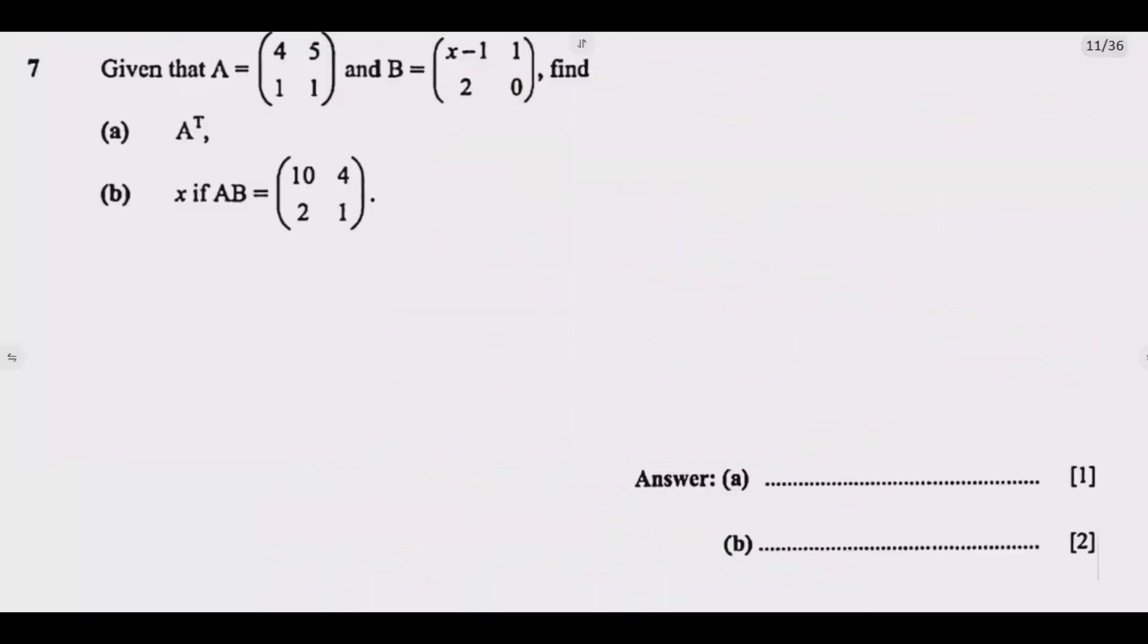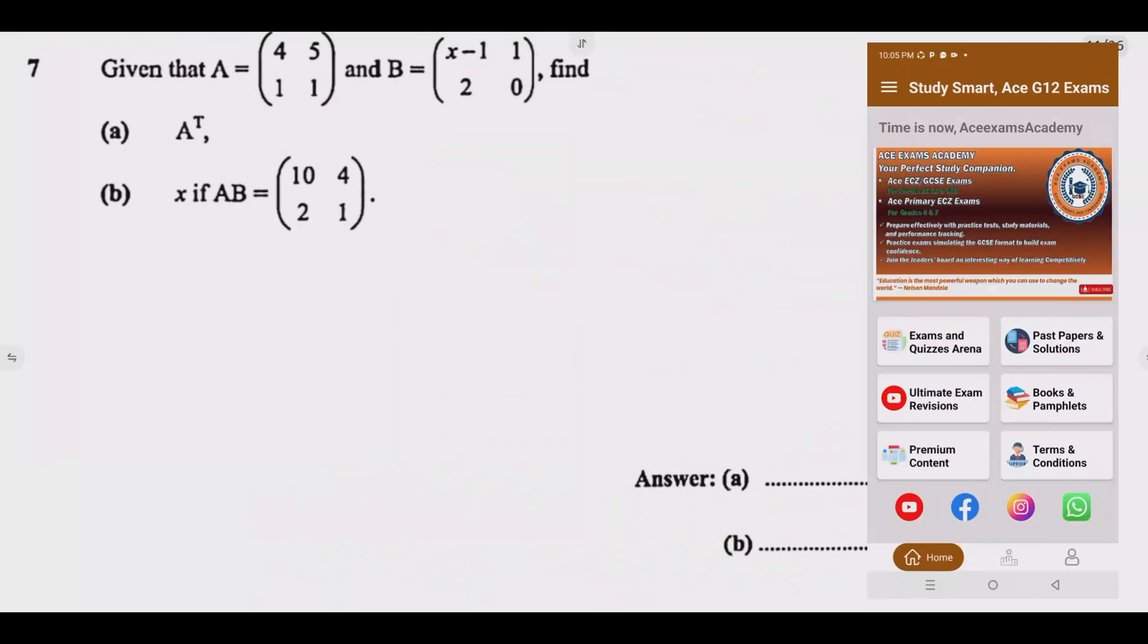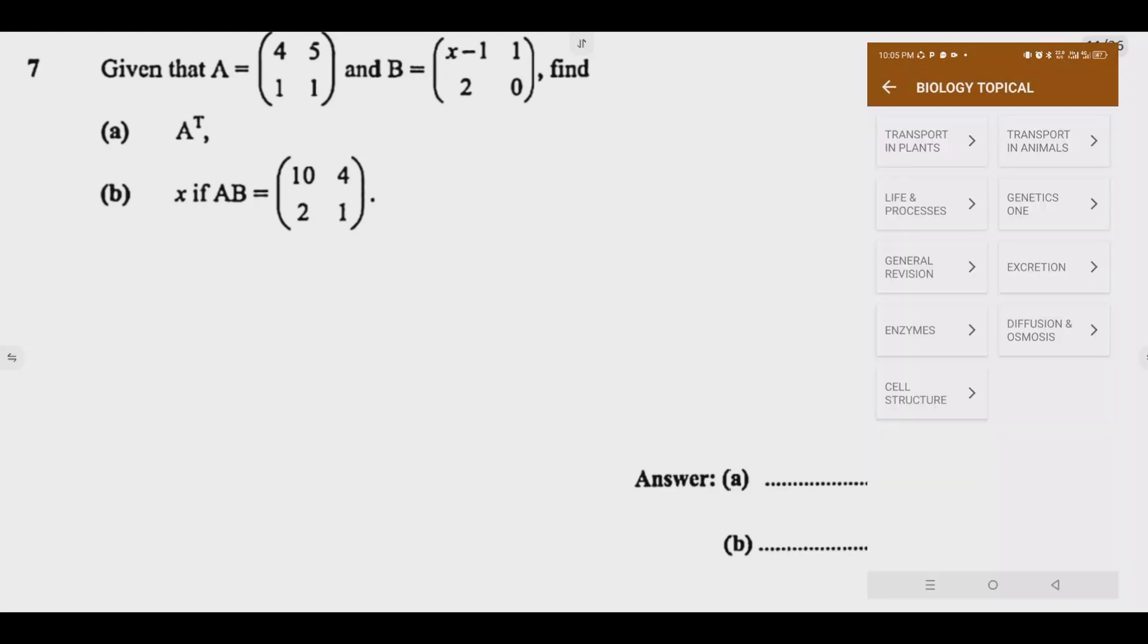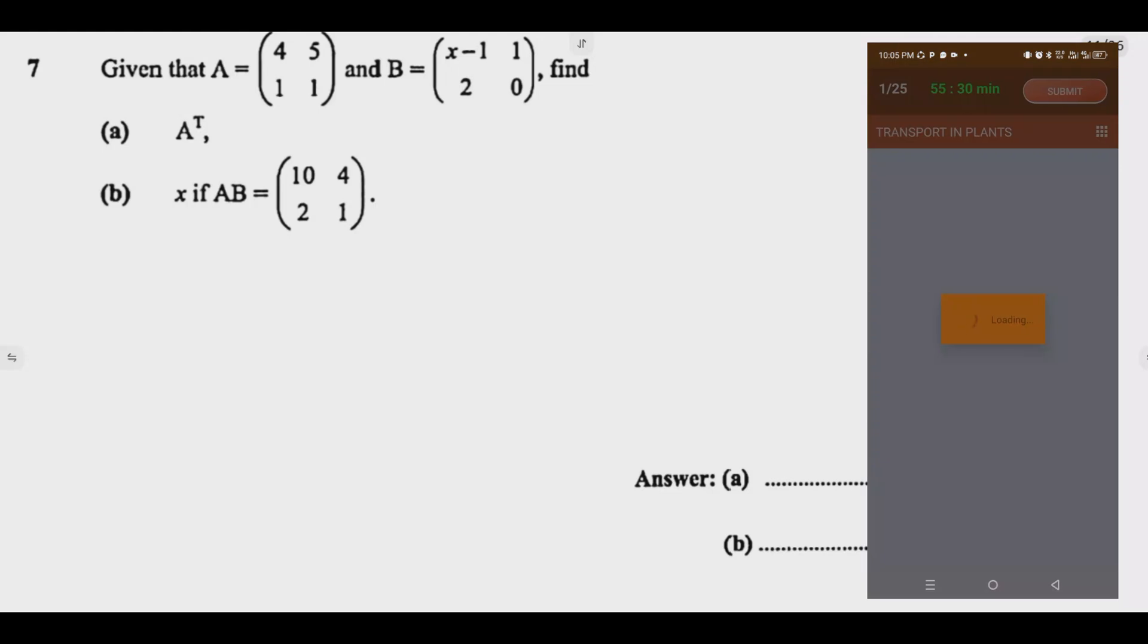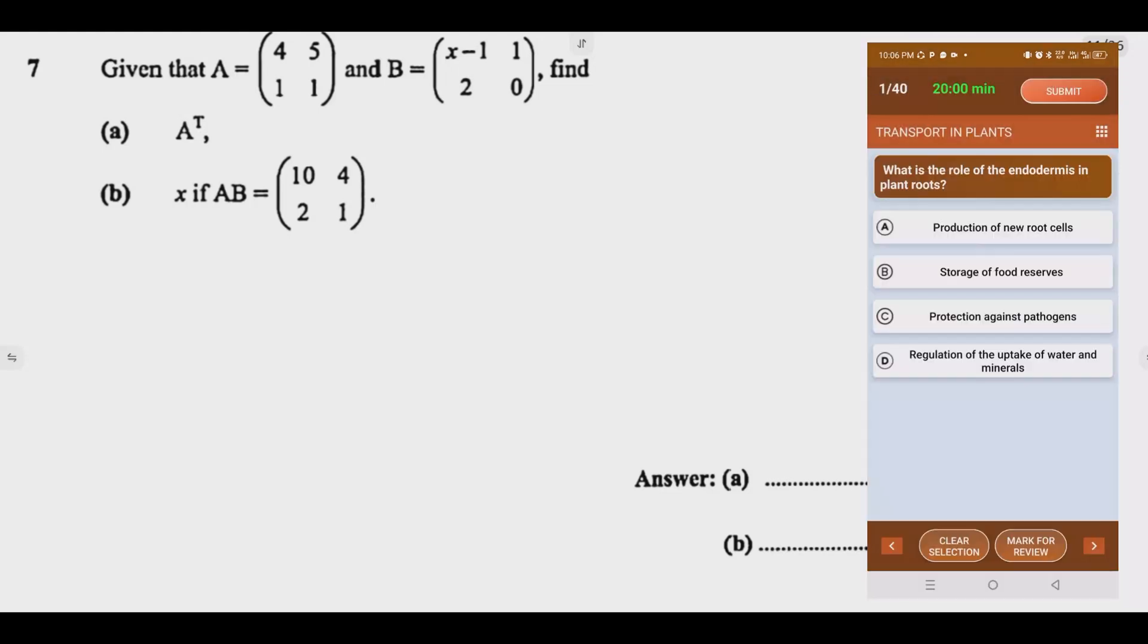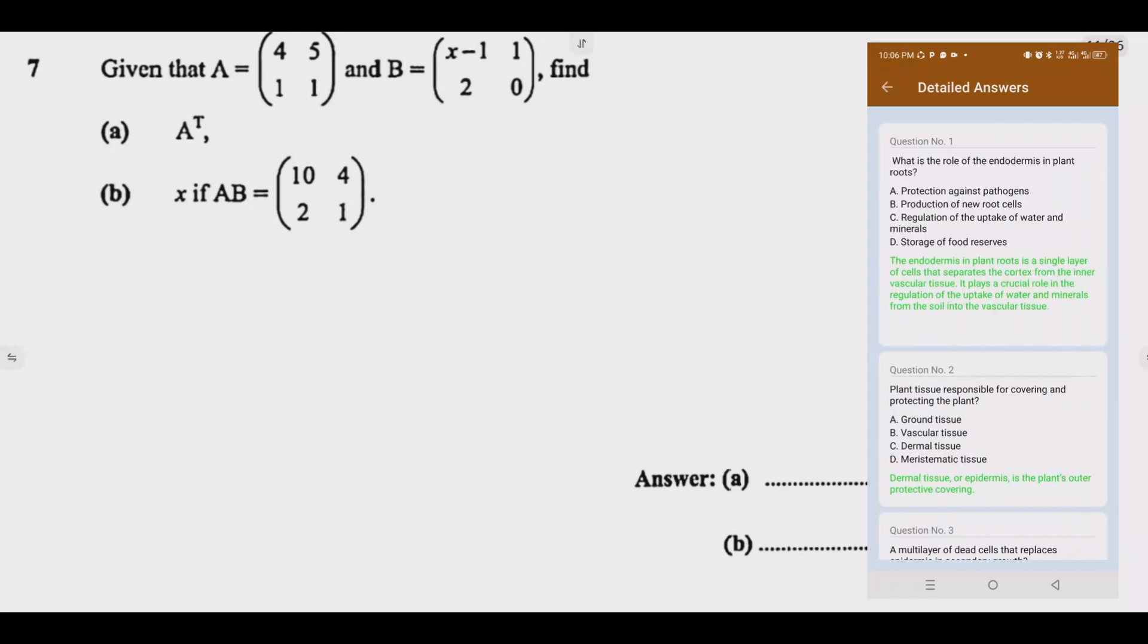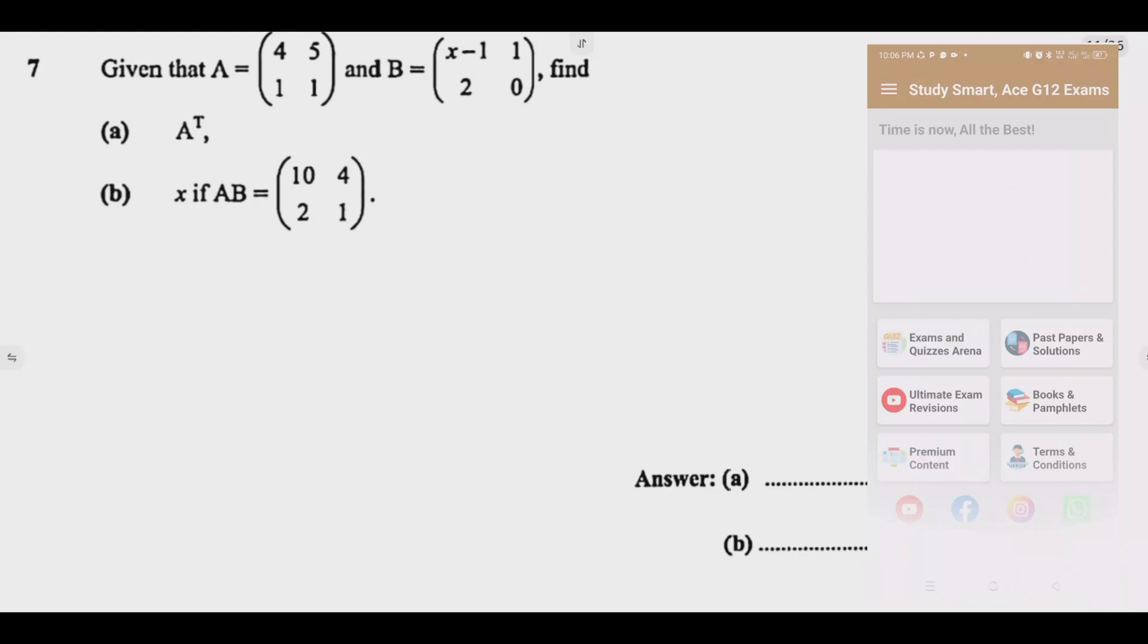Question 7: Given that A is a 2 by 2 matrix with 4, 5, 1, 1, and B is also a 2 by 2 matrix with X minus 1, 1, 2, and 0. Find question A, A transpose; question B, X if A times B equals a 2 by 2 matrix with elements 10, 4, 2, and 1.